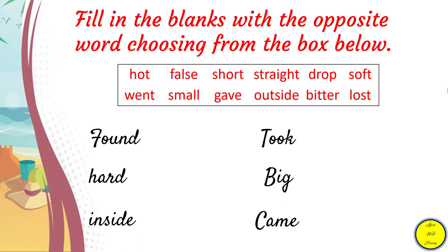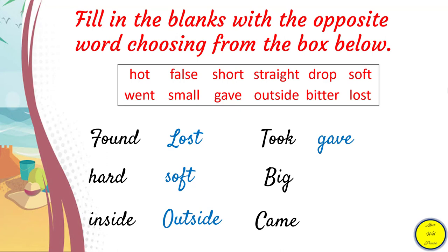The next question is: fill in the blanks with the opposite word. Some words are given and you have to choose their opposite from the box. The first word is 'found' and its opposite is 'lost.' The next word is 'hard' and its opposite is 'soft.' Then 'inside' — its opposite is 'outside.' The next word is 'took' and its opposite is 'gave.'